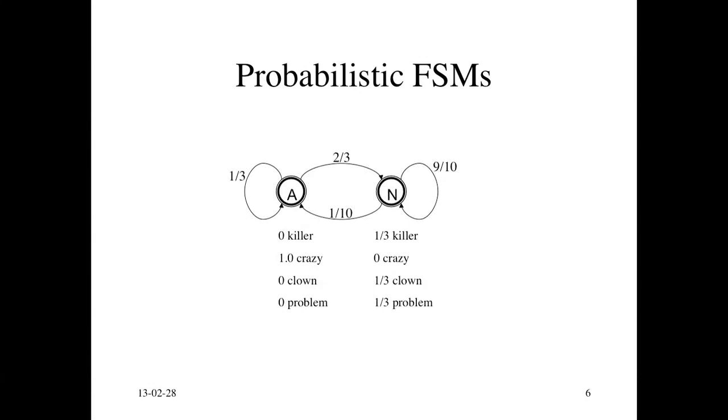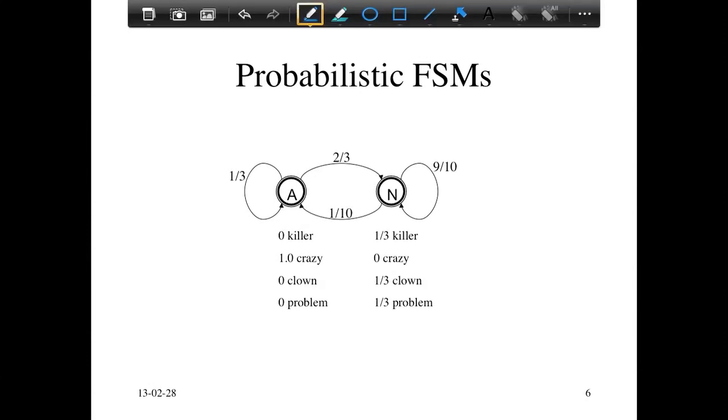Here's an example of an HMM. It has two states, A and N. You can check that the two conditions I mentioned are in fact satisfied. There's two arcs going out of A, this one and this one. Those two arcs have one third and two third.